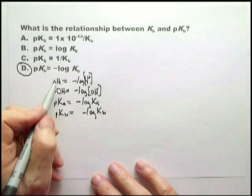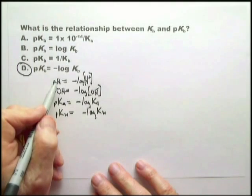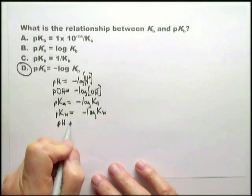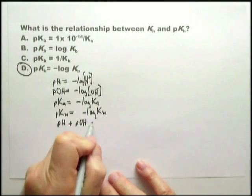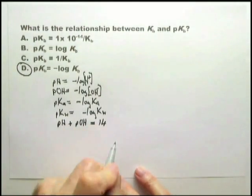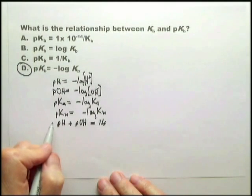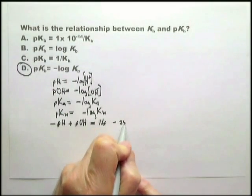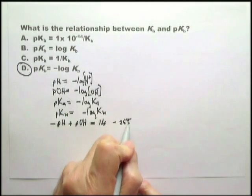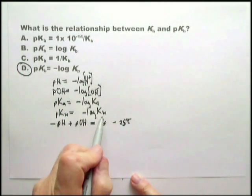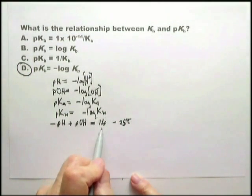And you have to remember the relationship between pH and pOH: pH plus pOH equals 14. Just let me say that this is true at 25 degrees centigrade. If the temperature changes, this number changes.